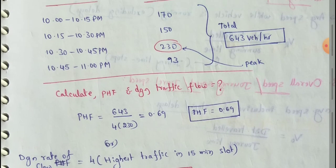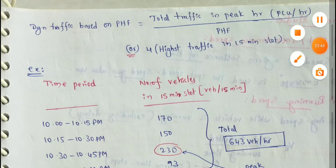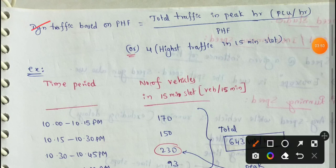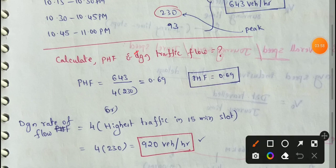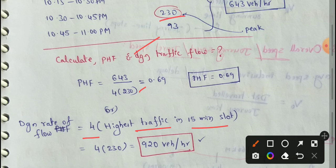Next, we will see design traffic based on PHF. Design traffic flow equals 4 into the highest traffic in the 15-minute slot — that is 4 into 230. The peak 15-minute slot is 230 vehicles per 15 minutes, so 4 into 230 equals 920 vehicles per hour. The design flow rate, or road load, is 920 vehicles per hour.